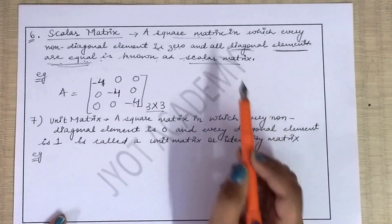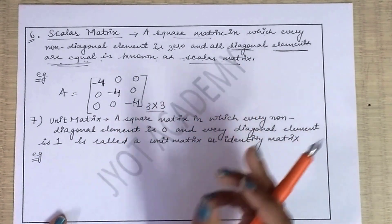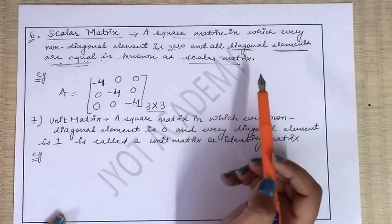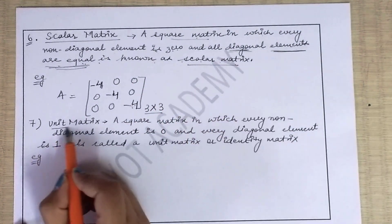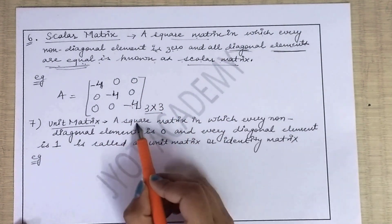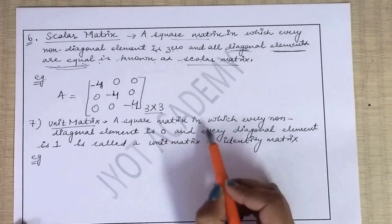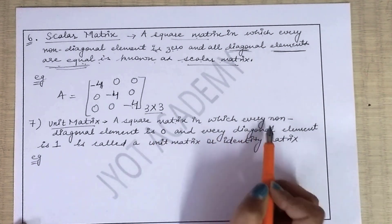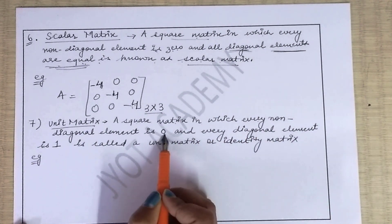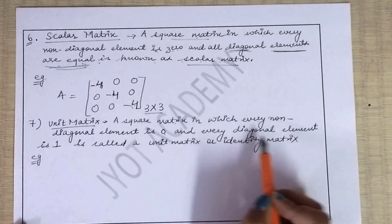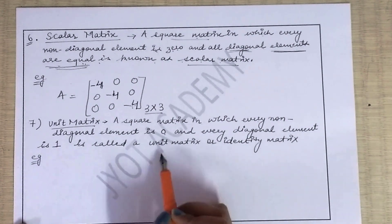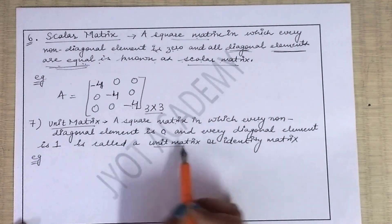I hope the difference is clear between diagonal matrix and scalar matrix. Unit matrix kishe kahenge — a square matrix in which every non-diagonal element is zero and every diagonal element is one is called a unit matrix.